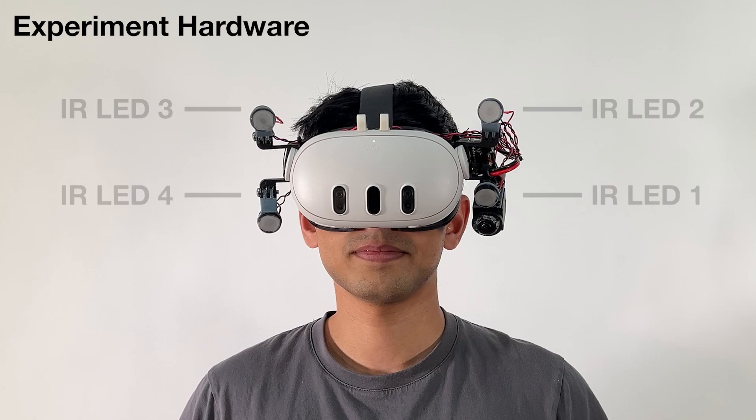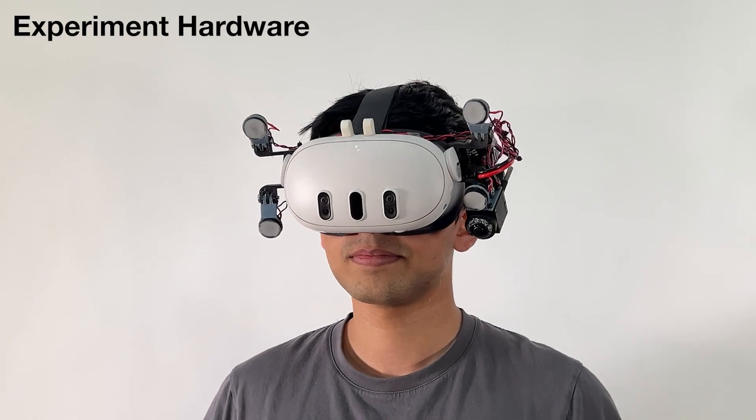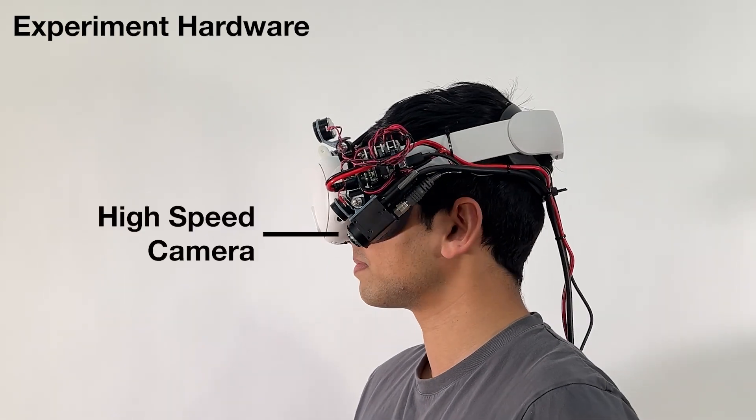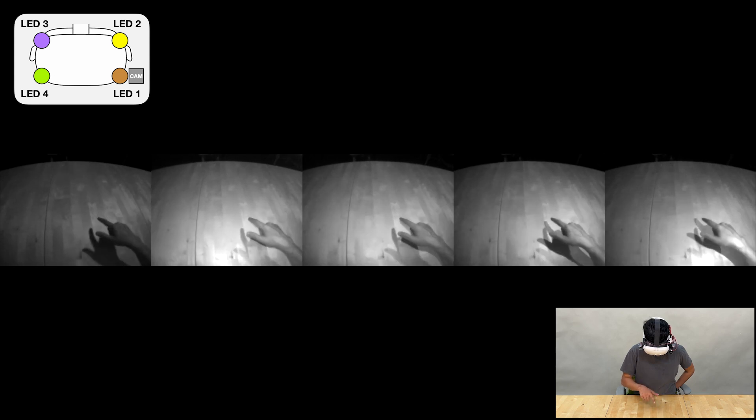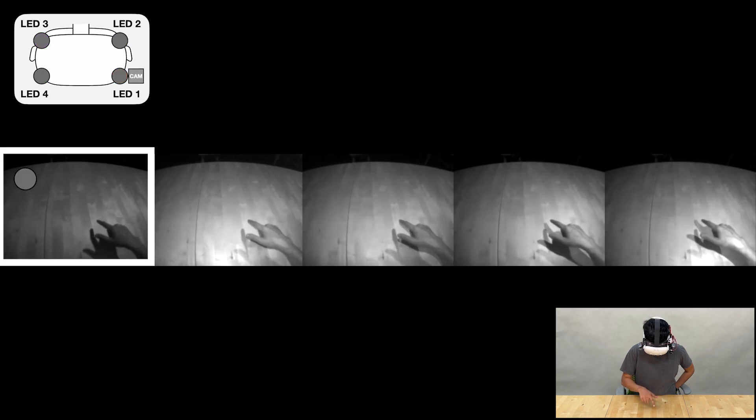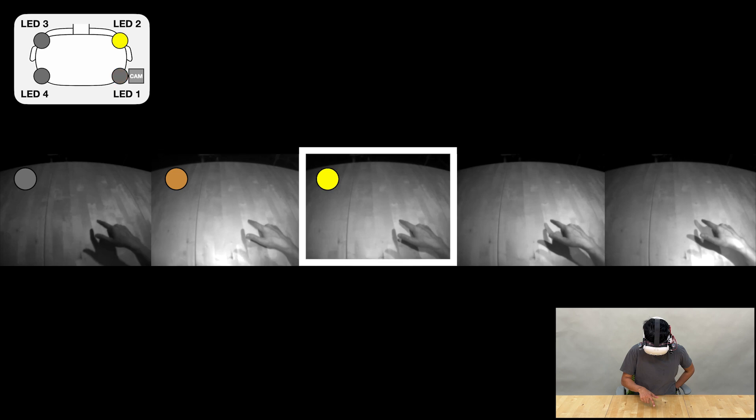For experimentation, our Eclipse Touch prototype incorporates four illuminators operating in invisible infrared light and one high-speed trigger-controlled camera. A specific firing sequence is used. First, we get a frame with no active illumination other than ambient light. We then capture four more frames, one for each of the LED illuminators.